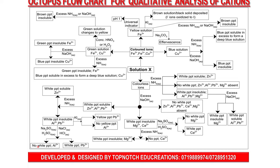If there is no white precipitate, the inference is aluminum is present. Don't say 'colorless solution is observed' — you are looking for a white precipitate. If there is no white precipitate, lead is absent, and therefore aluminum is present. That is the elimination technique.